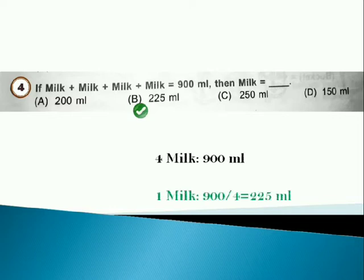If milk plus milk plus milk plus milk is equal to 900 ml, then milk is equal to... Answer is option B because 4 milk is 900 ml. So 1 milk will be 225 ml.